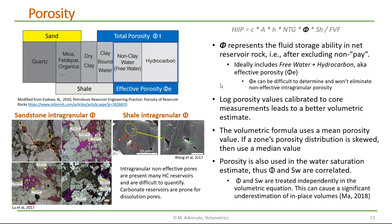For the volumetric equation, we like to use what's called the effective porosity, which is usually where we exclude the clay-bound water. Log porosity values calibrated to core measurement lead to a better volumetric estimate. The volumetric formula uses a mean porosity value. If a zone's porosity distribution is skewed, then a median value should be used.